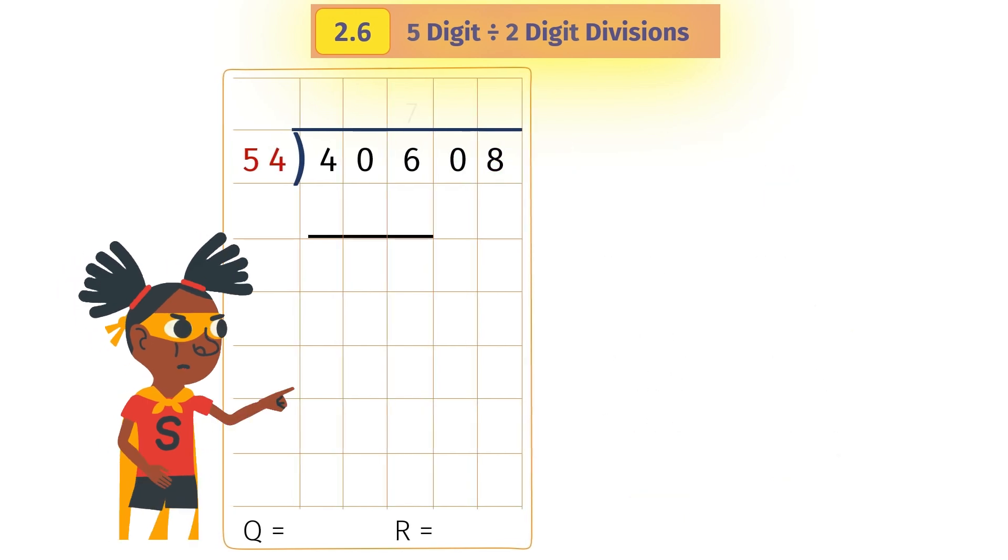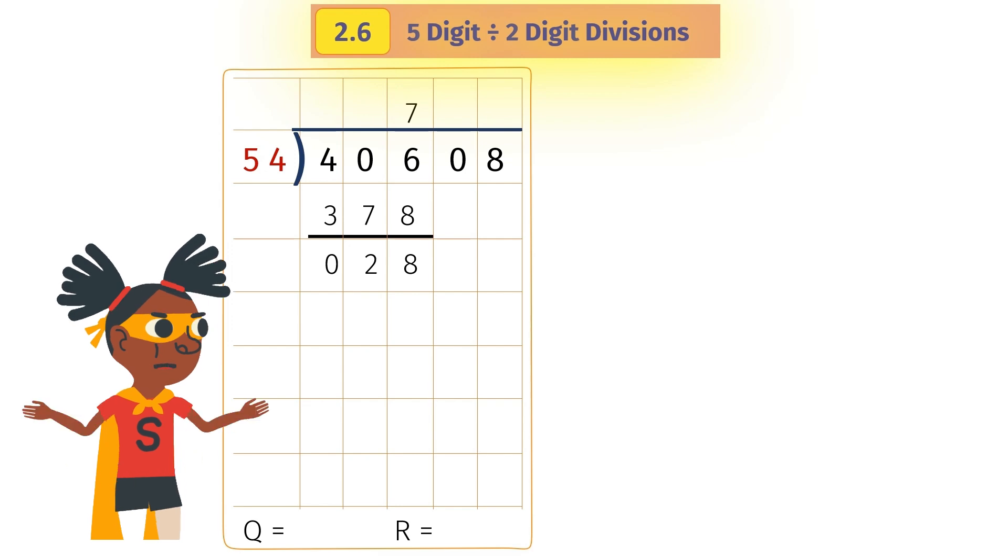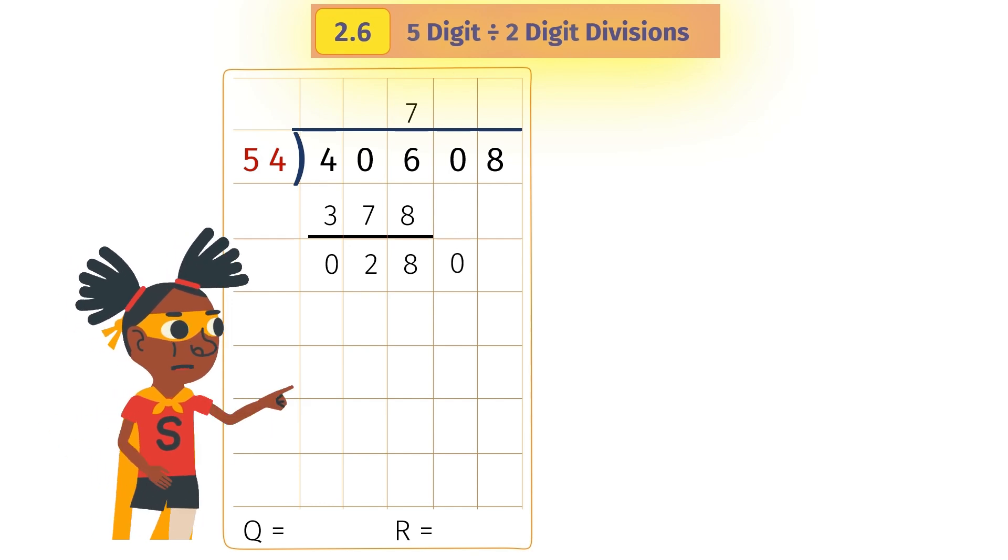We write 7 and 378 in the correct place, and subtract 406 minus 378. We get 28, and bring down 0 from the dividend. Now we have to divide 280 by 54.